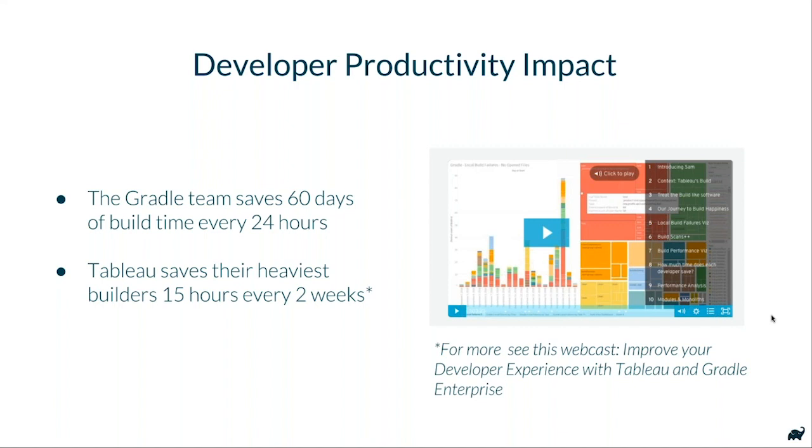We want to talk about the impact of caching on developer productivity. In the last few years since we launched the cache for Gradle — the remote and local cache — we've seen a lot of folks interested in how to improve build times. One of the best ways is with caching. The Gradle team saves around 24 hours every 60 days. Tableau, one of our customers, saves around 15 hours every two weeks. It's one of the biggest low-hanging fruits.